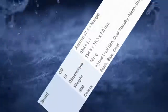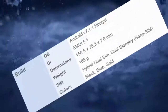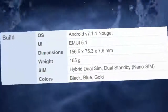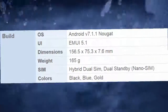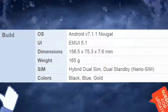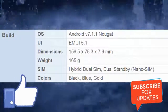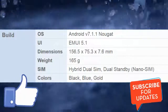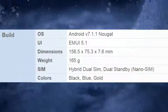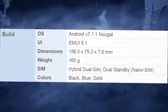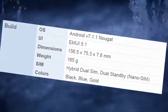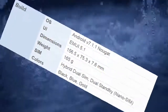Build OS: Android V7.1.1 Nougat, MIUI 5.1. Dimensions: 156.5 x 75.3 x 7.6 mm. Weight: 165g. SIM: Hybrid Dual SIM, Dual Standby, Nano SIM. Colors: Black, Blue, Gold.